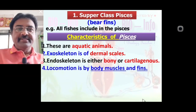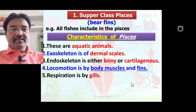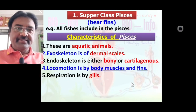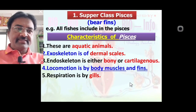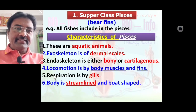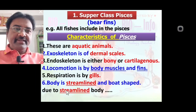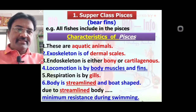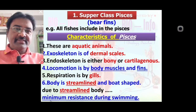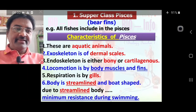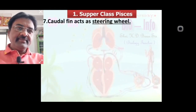Locomotion is by body muscles and fins. Respiration is by gills — internal gills are most important, and each and every Pisces animal shows internal gills. Body is streamlined or boat-shaped. Due to the streamlined body, there is minimum resistance during swimming. Streamline means the head is pointed, looking like an aeroplane. Streamlined body is one of the adaptations of Pisces.